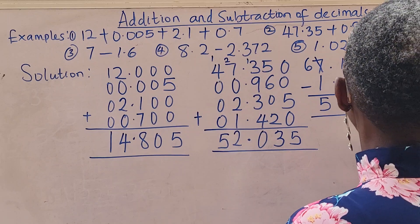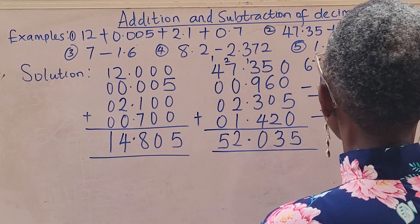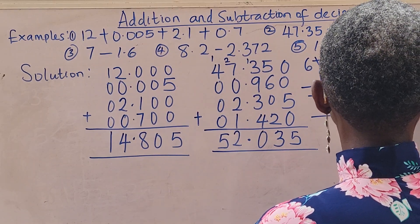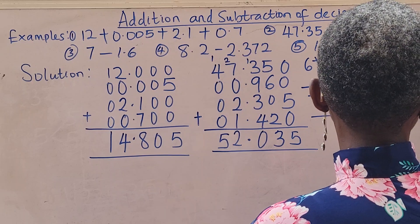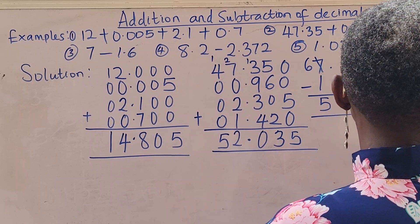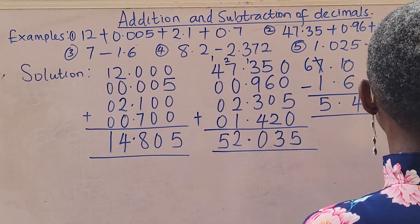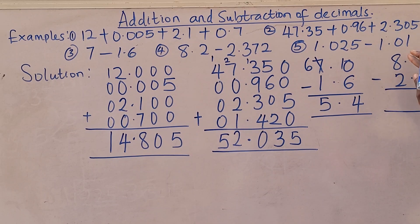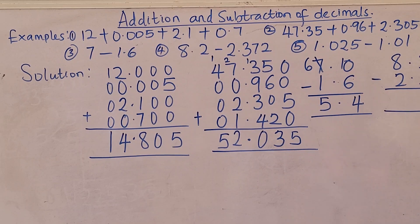Next: 8.2 take away 2.372. I have told you — do not worry if the digits are not the same length. Just make sure your decimal point is aligned. Then add zeros to fill up the empty spaces, and you can do your normal subtraction.